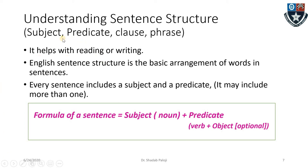Now let us understand the sentence structure. Sentence structure should have a subject and predicate, clause and phrase — it helps us to read and write. English sentence structure is the basic arrangement of words in a sentence. These words come in the form of parts of speech: in the form of subject we have nouns, in the form of action we have verbs, and there are adjectives, adverbs, and pronouns which are used for nouns or to modify nouns or verbs.